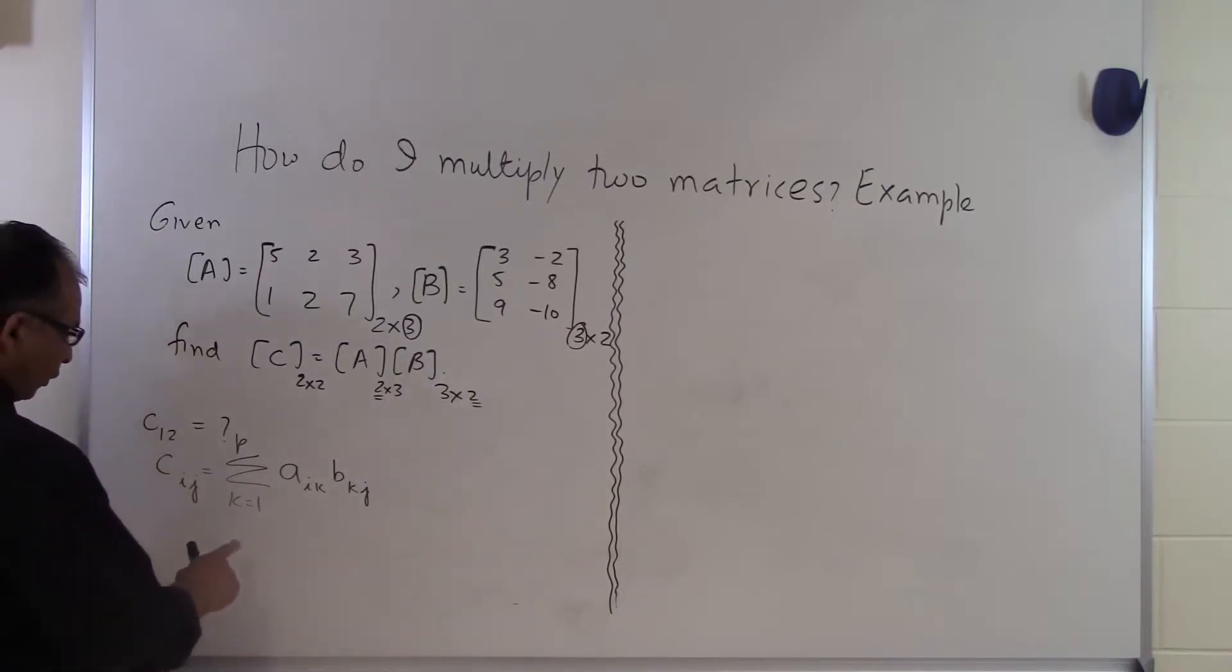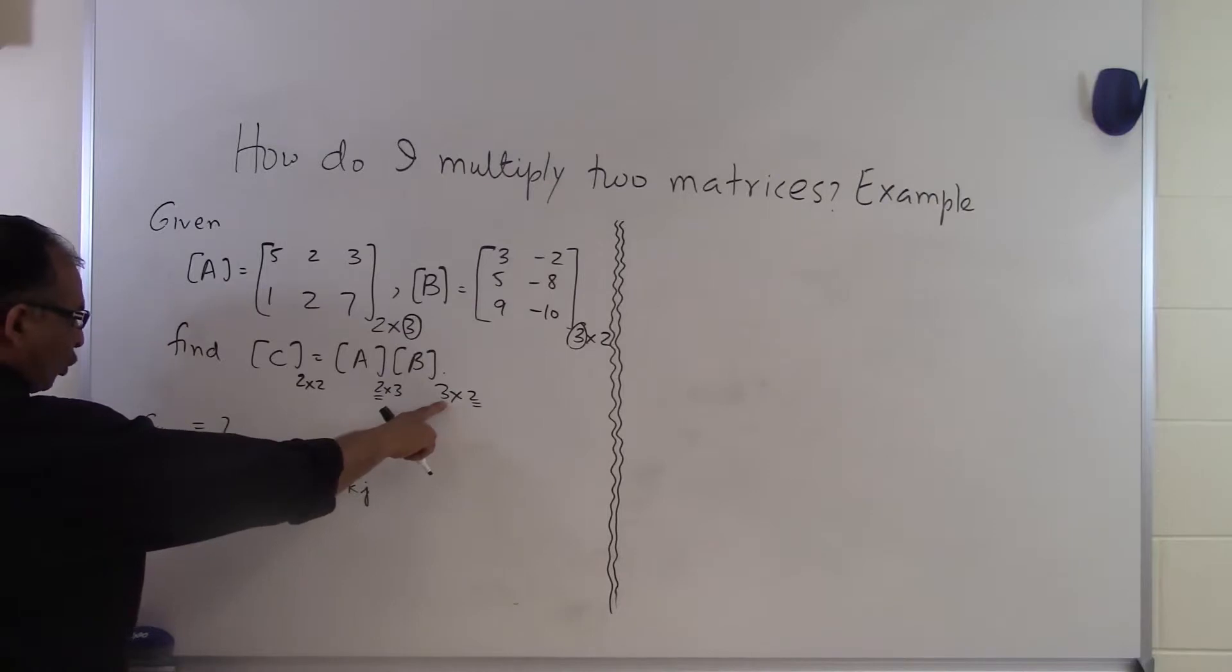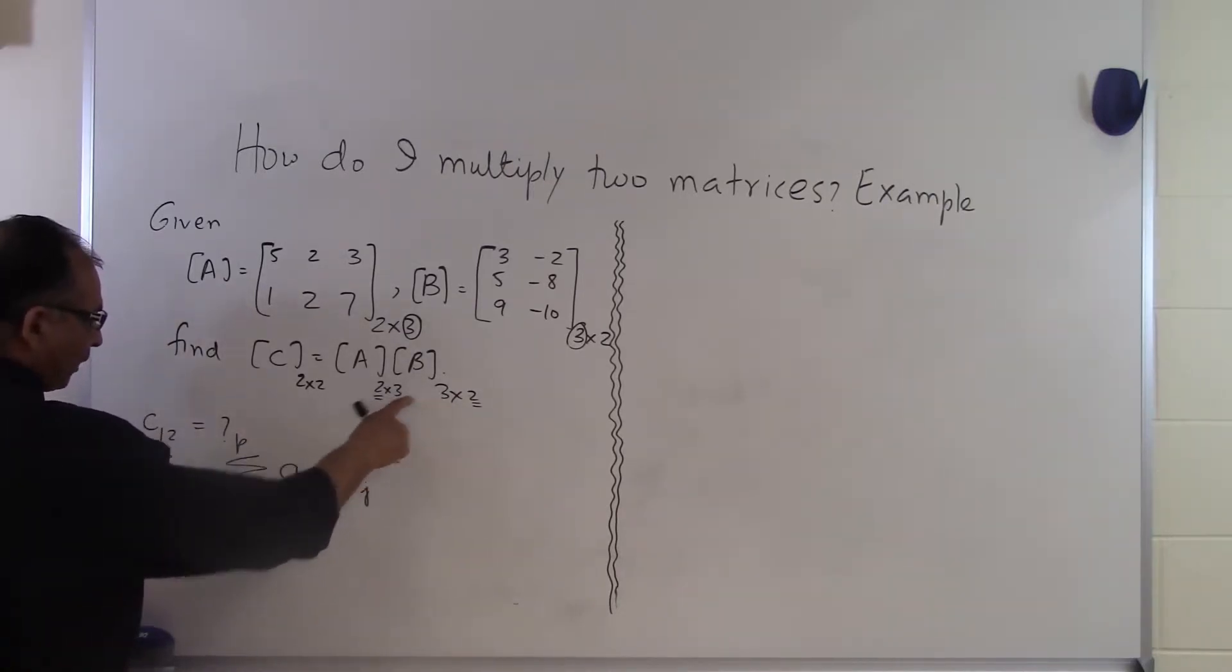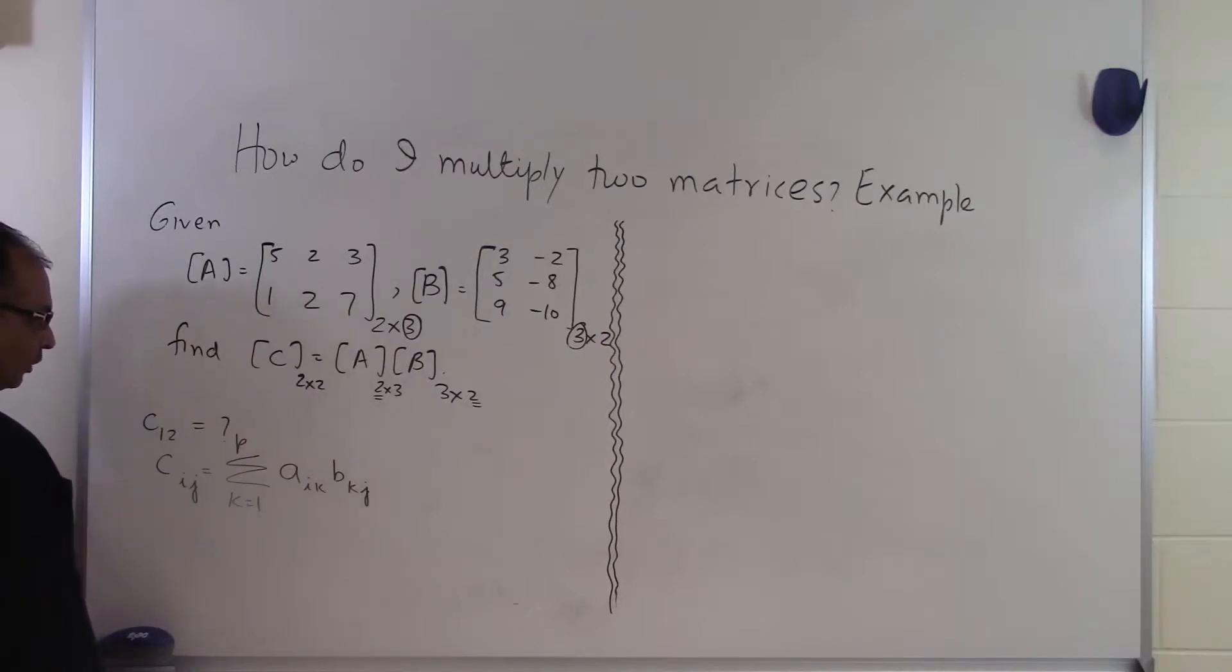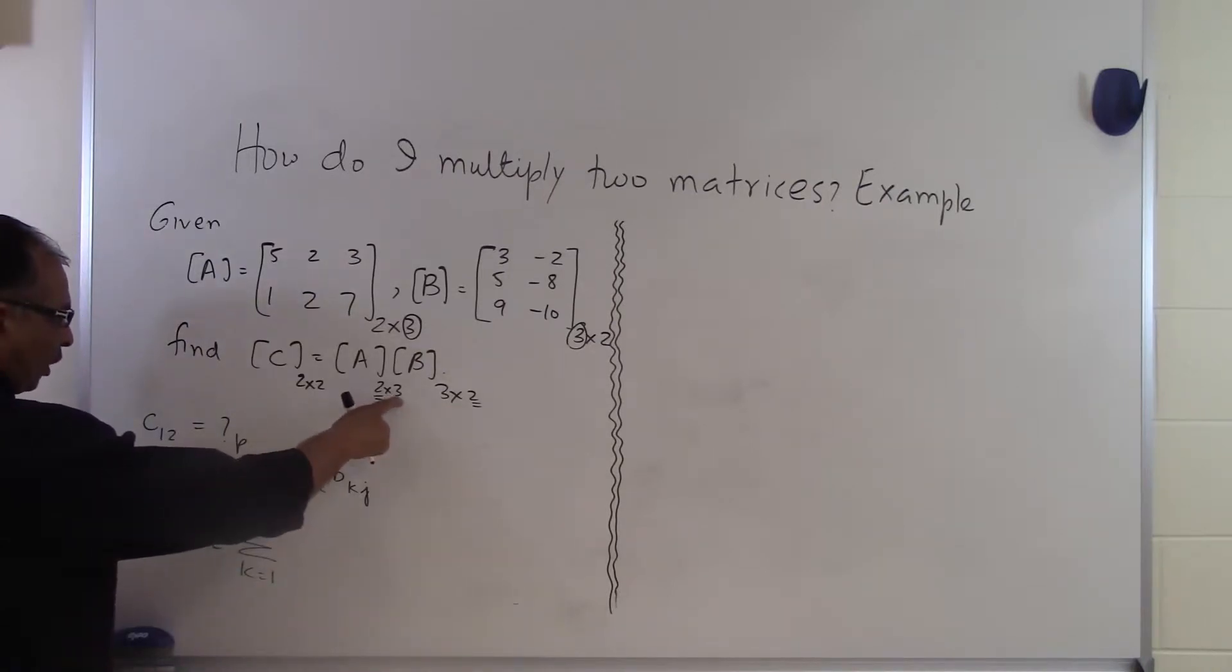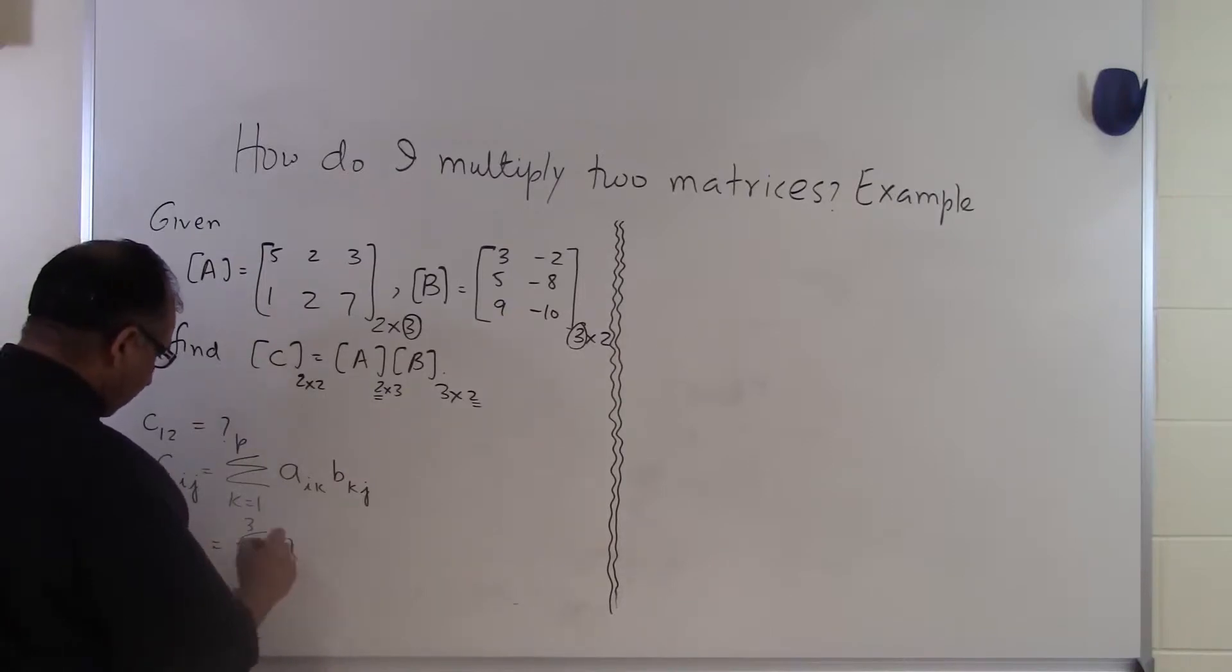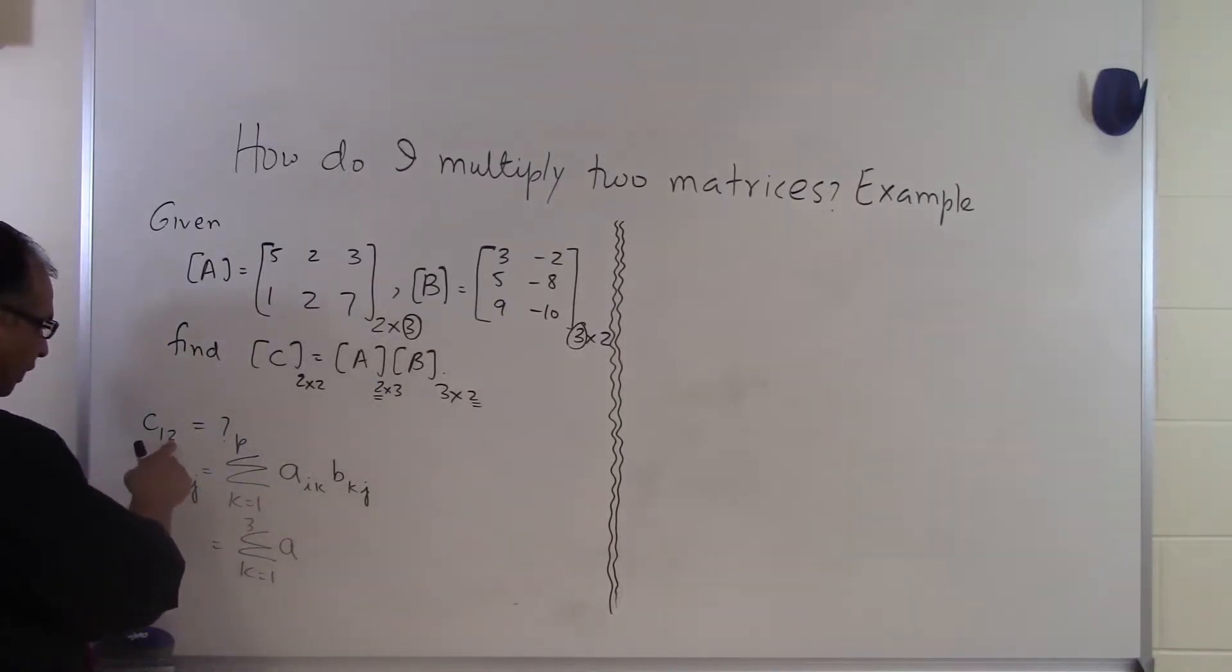So now I know that P is the number of columns that you have in the A matrix or the number of rows that you have in the B matrix. It is the common number which we have, which we talked about in order for the multiplication to proceed. So in this case, K is equal to 1 and P is the number of columns of A or the number of rows of B which is 3.